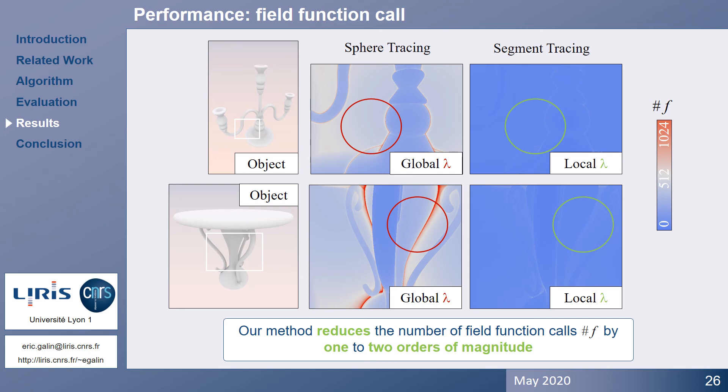First, results show that our method significantly reduces the number of field function calls, sometimes by up to two orders of magnitude. This can be seen on those images, showing the number of field function calls.